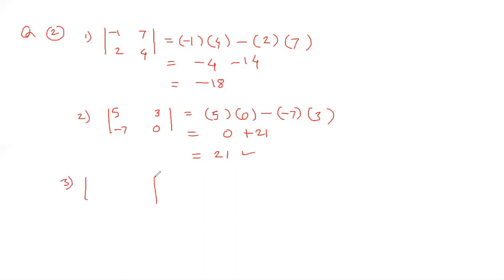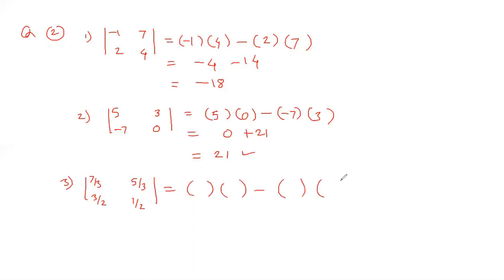The third determinant we are going to solve is the determinant of 7/3, 5/3, 3/2, 1/2. Again, we are going to cross multiply: 7/3 multiply by 1/2, minus 3/2 multiply by 5/3.